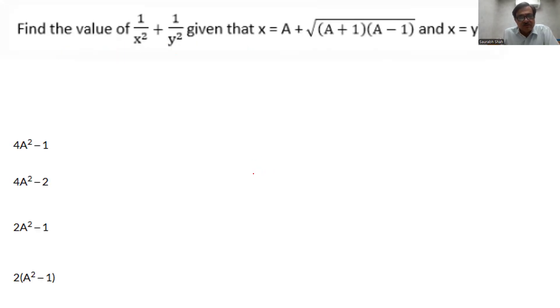So one of the first few questions of algebra: 1 upon x square plus 1 upon y square. We need to find that, and x is 1 upon y. So 1 upon y square would be x square. Ultimately we need to find 1 upon x square plus x square.